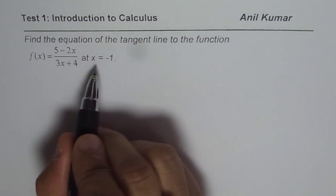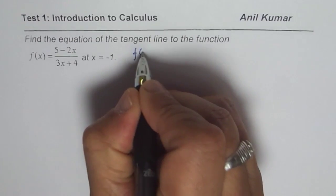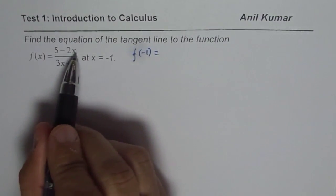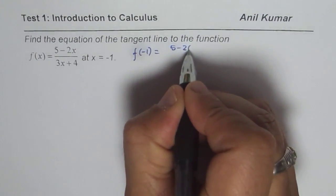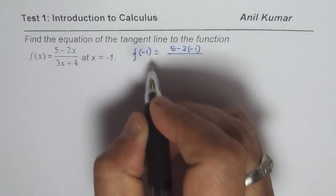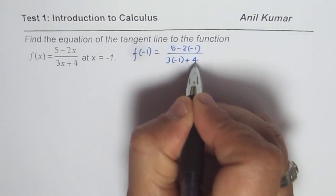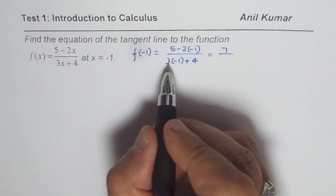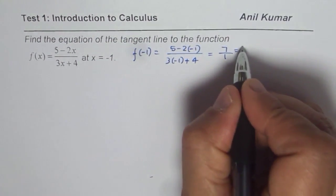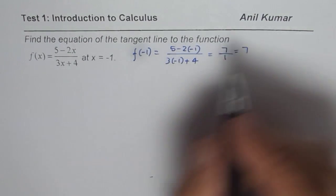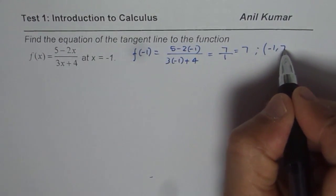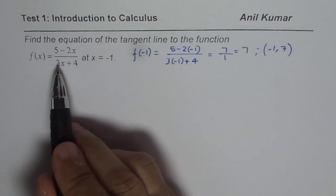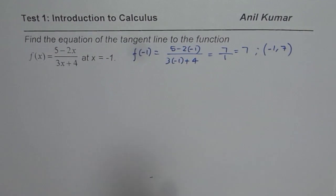First, let's find the point. What is the value of y at x = -1? So f(-1): substitute x as -1. We get (5 - 2(-1)) / (3(-1) + 4), which gives us (5 + 2) / (-3 + 4) = 7/1 = 7. So the point is (-1, 7).